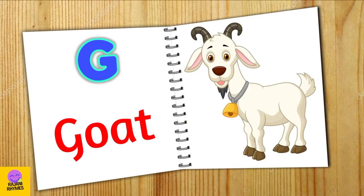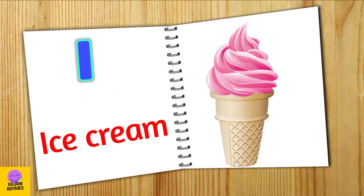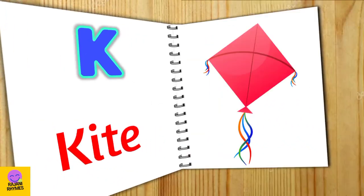G. G for goat. H. H for hen. I. I for ice cream. J. J for juice.